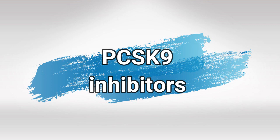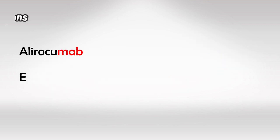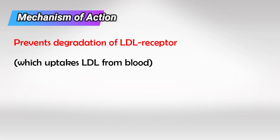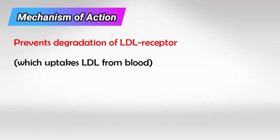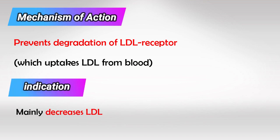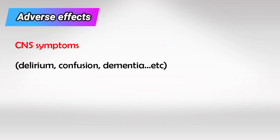Finally, we have the PCSK9 inhibitors. These are antibodies, so they end with the suffix '-mab.' They prevent the degradation of the LDL receptor in the liver, so the LDL receptor keeps taking more and more LDL from the blood — that's why they're mainly used as an LDL-decreasing agent. The main side effect is CNS symptoms, so look for delirium, confusion, dementia, etc.